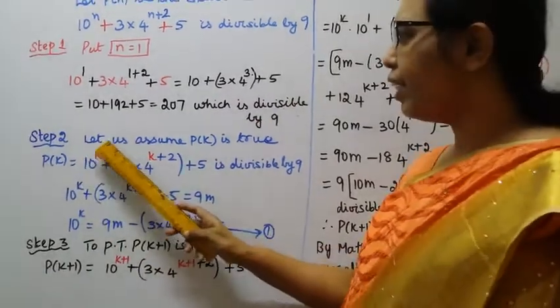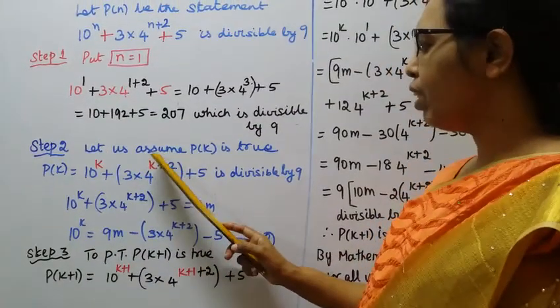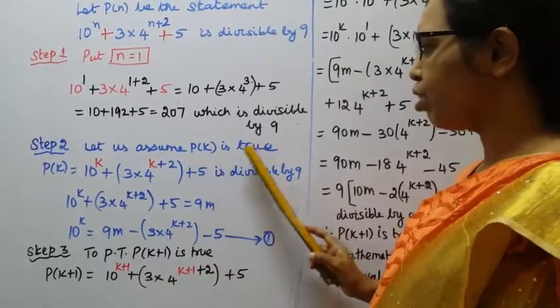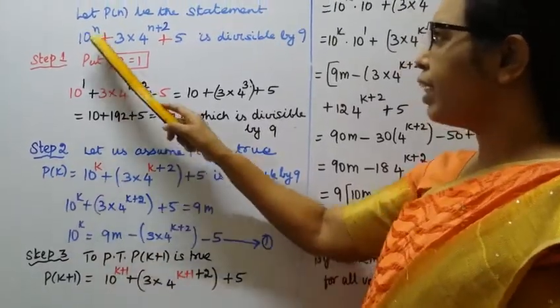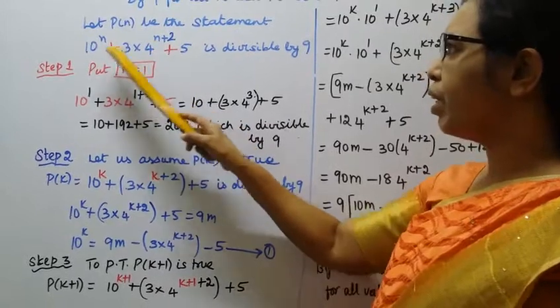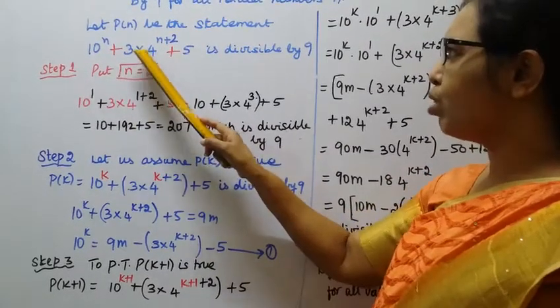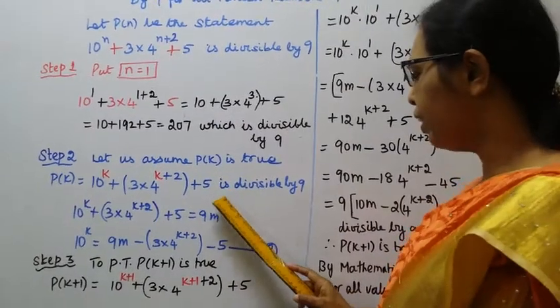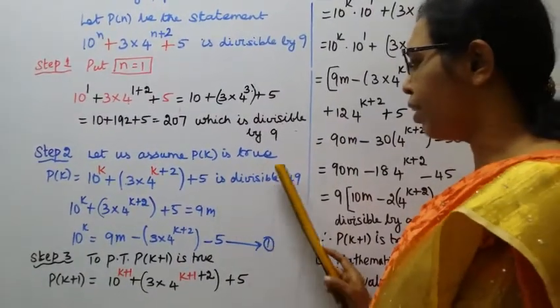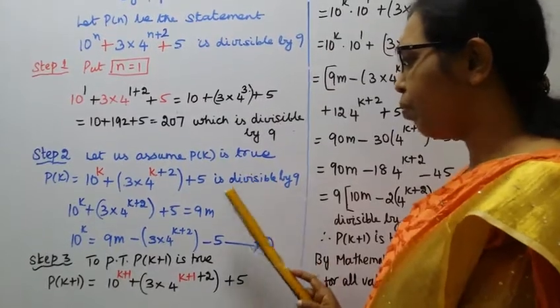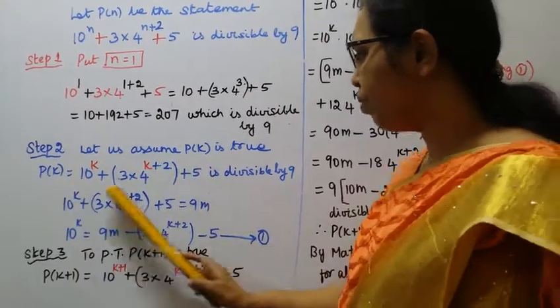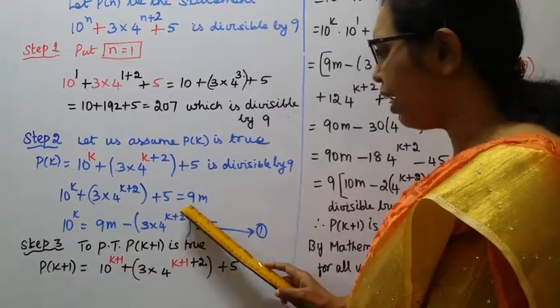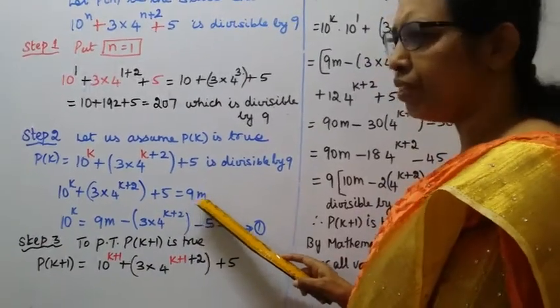Step 2, let us assume P(k) is true. P(k), putting n equal to k: 10 power k plus 3 into 4 power k plus 2 plus 5 is divisible by 9. Divisible, so the full term is divisible by 9, we write it as 9m.